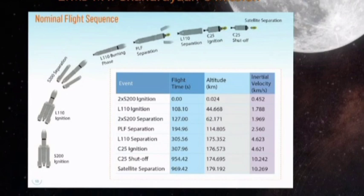The core L110 stage, having completed its burn time of about 200 seconds, is separated from the ongoing rocket. This event takes place at 306 seconds into the flight, at which point the altitude will be 175 km and the rocket would have acquired 4.2 km per second relative velocity.